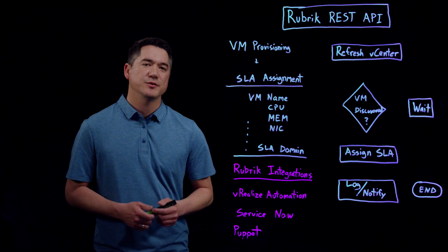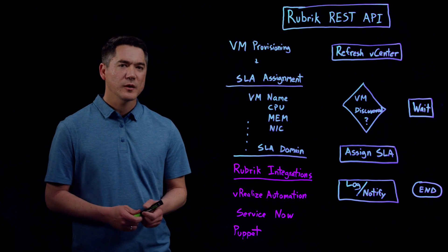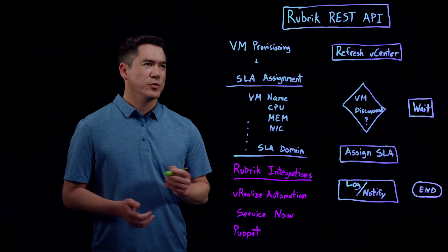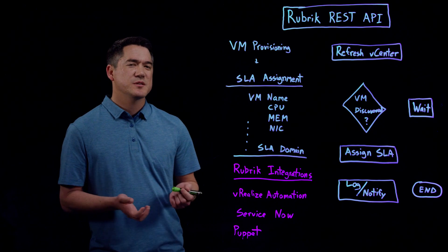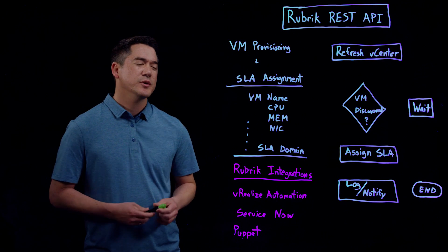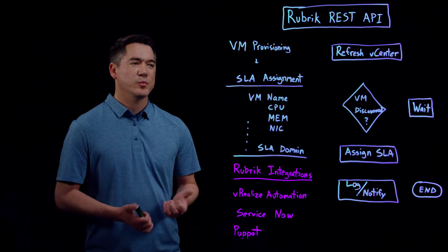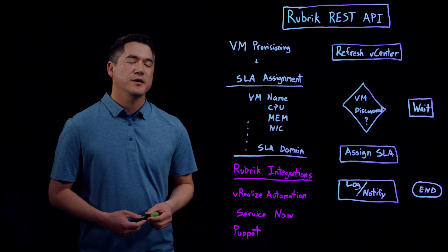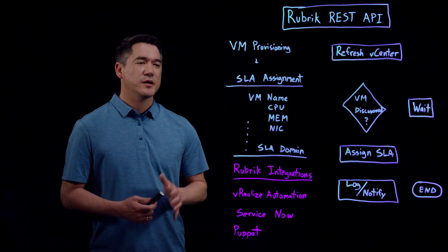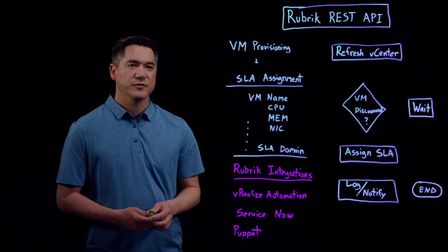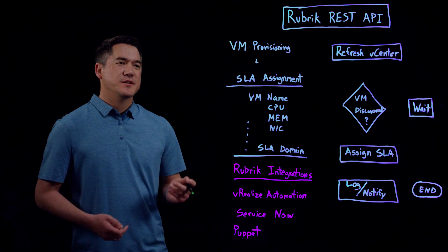Workflows that can be integrated into any orchestration platform or engine out there that supports outbound REST. First off, I would like to point out that the Rubrik platform is designed around an API-first architecture. What this means is any of the features that you see in Rubrik, our engineers and developers have made sure that there is a REST call for that. In fact, our UI leverages our REST API with every UI click and action in the interface.